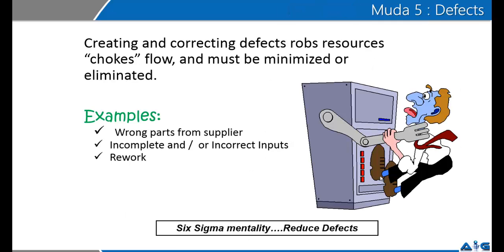The fifth waste is defects. Defects are always dangerous for businesses — they create rework, cost a lot of money, and hurt customer satisfaction. First-time right is always better in terms of cost efficiency, so rework will always hit you on cost. Defects create a bad DNA in the organization. You must pick up the Six Sigma mentality and work at reducing defects in your business.